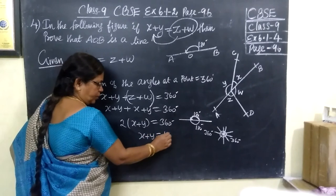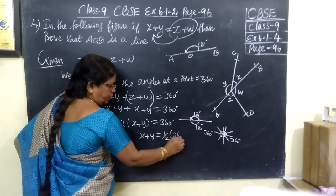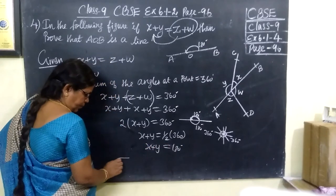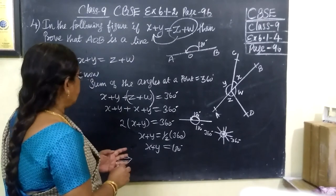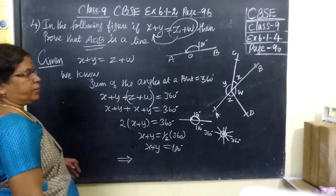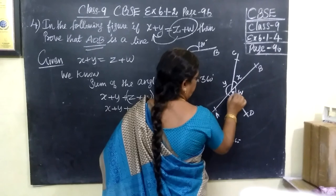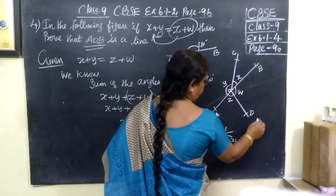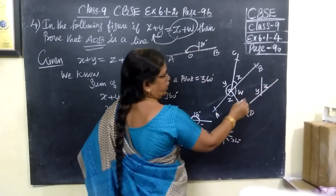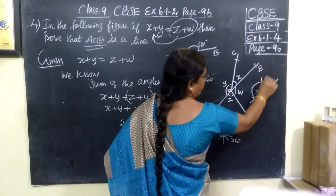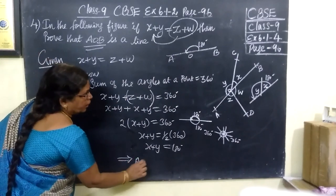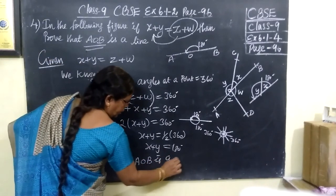Therefore, X plus Y equals half of 360, which equals 180 degrees. If X plus Y equals 180 degrees, which implies it is a straight line. You want to prove AOB is a straight line. Here is AOB — separately you draw: this is X and this is Y. And we have proved the sum of the angles equals 180 degrees, which implies AOB is a straight line.